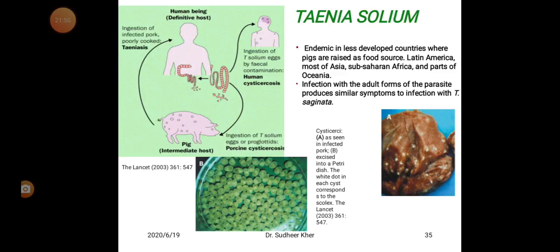The larval form in Taenia solium is called cysticercus cellulosae, while in Taenia saginata it is called cysticercus bovis. Cysticercus as seen in infected pork, when excised into a petri dish, shows white dots in each cyst corresponding to the scolex.